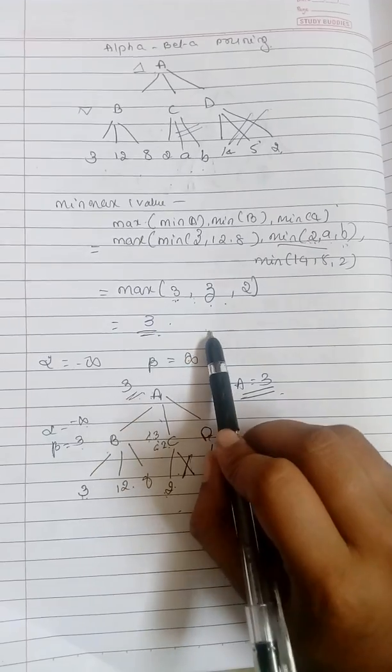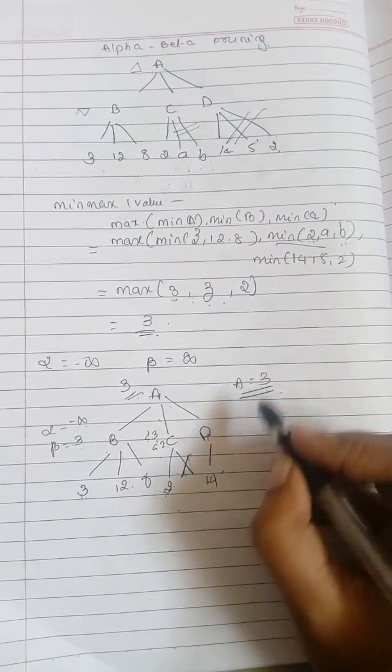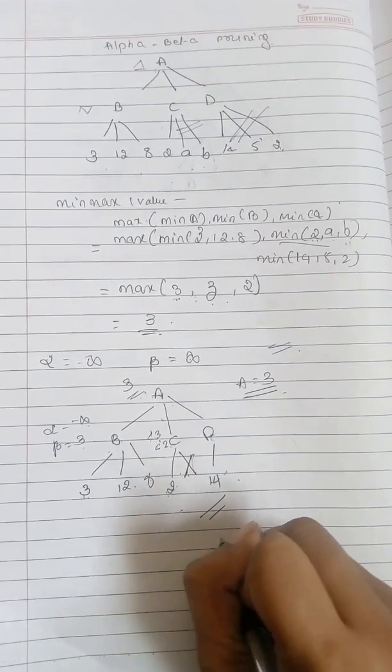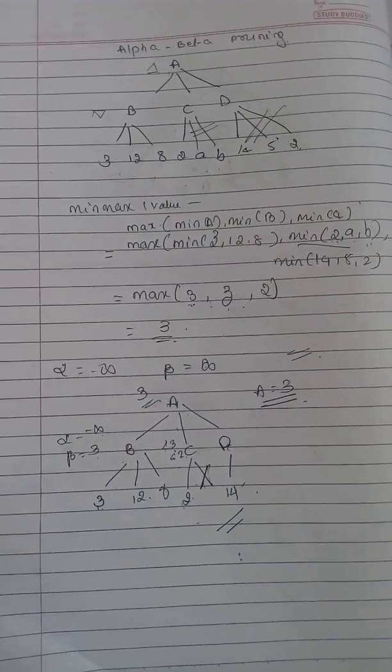So this is a formula to find out the root value, and you need to explain how you can derive using a tree or how you can prove this formula is true. This is what alpha-beta pruning is. Thanks for watching, bye bye.